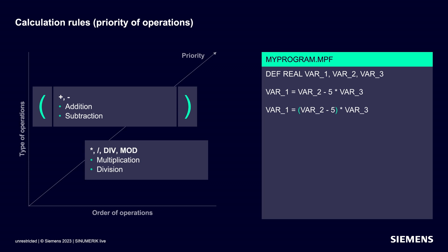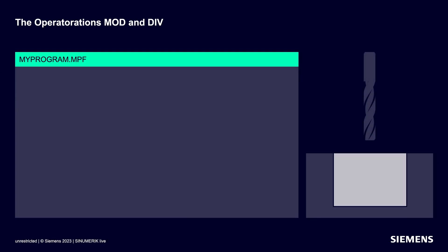Let's move on to the mod and div operations. I mention them explicitly because I need them frequently when working on machining cycles. When it comes to managing infeeds during milling or drilling, these operations are essential. For example, if we want to mill a pocket with multiple infeeds, we should know in advance how many complete infeeds there are and what the remainder is.